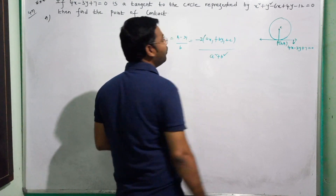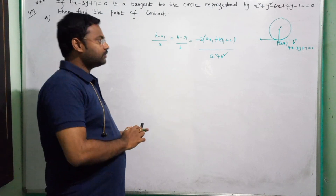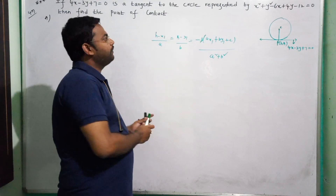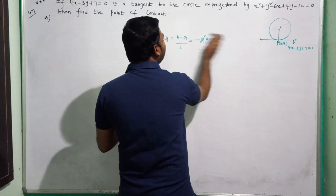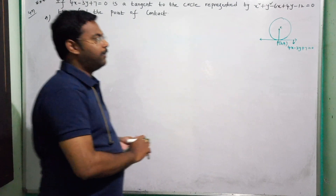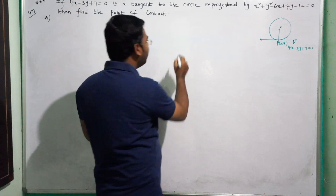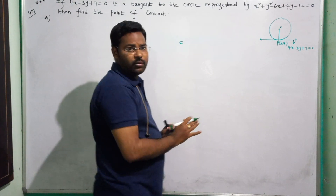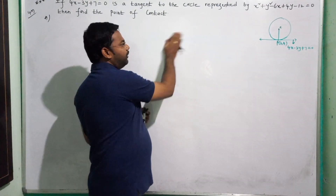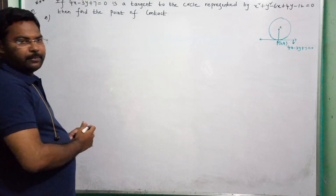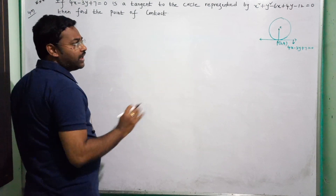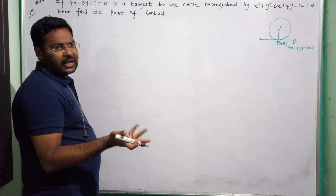That means the contact point is nothing but the foot of the perpendicular from the center C to the line. The circle has a center and the formula gives the h, k values — that is the contact point. The radius and the line are also given.